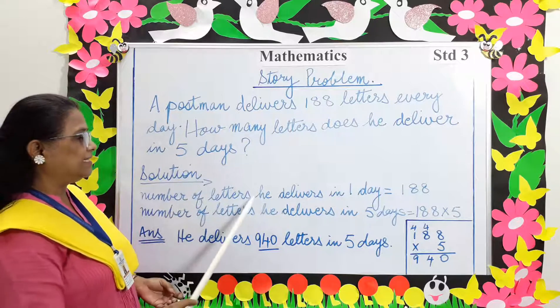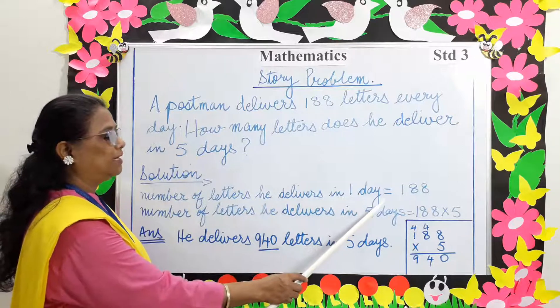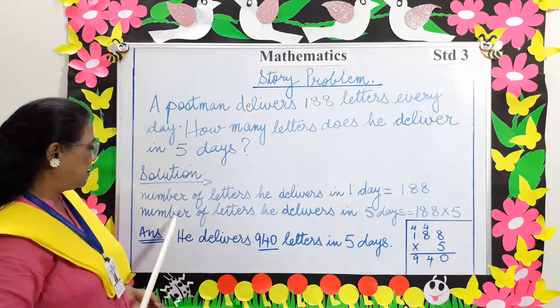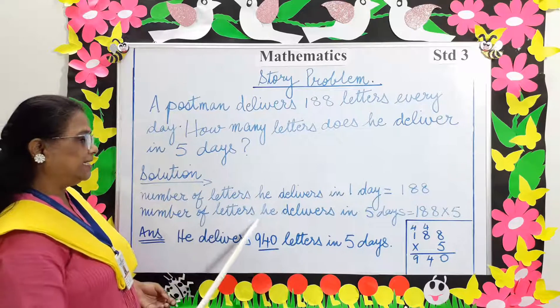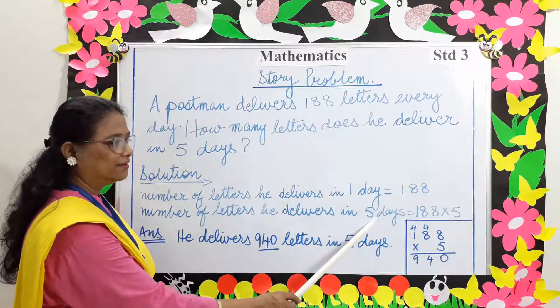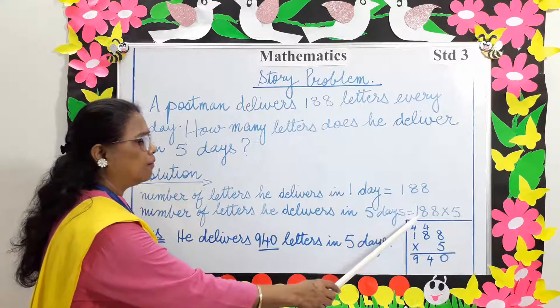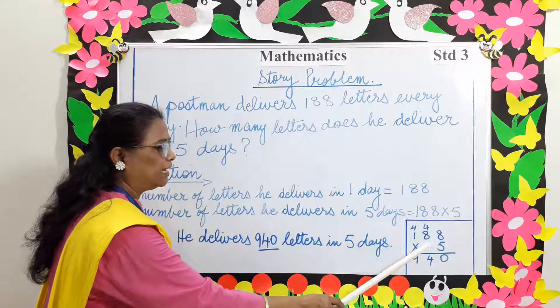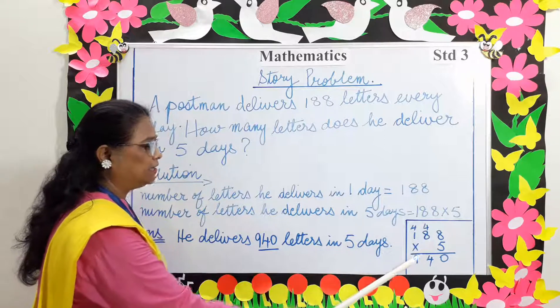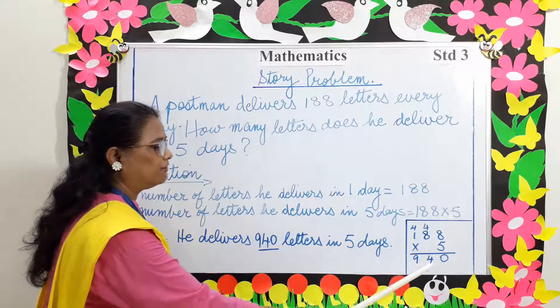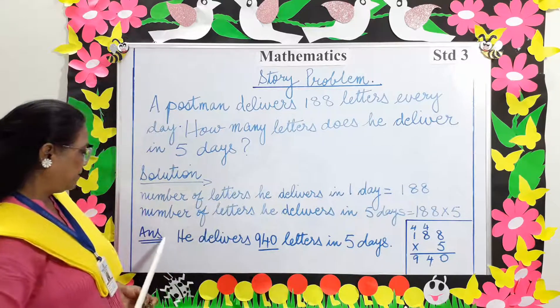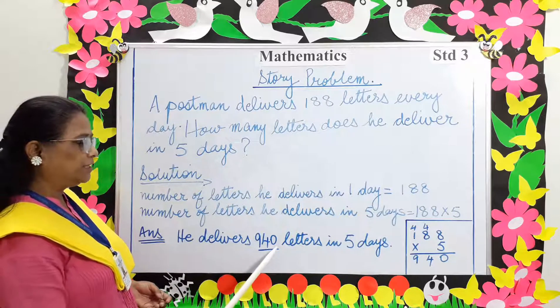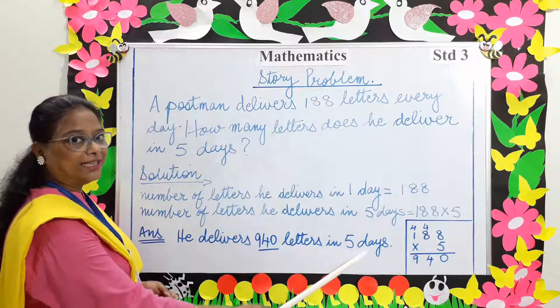Number of letters he delivers in 1 day equals 188. Number of letters he delivers in 5 days equals 188 multiplied by 5. If you work this out, your answer will be 940. Answer: he delivers 940 letters in 5 days.